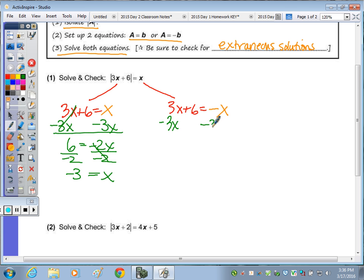Subtract 3x here, subtract 3x here. 6 is equal to negative 4x, divide by negative 4, and x equals—you can leave it negative 4/6, but if you reduce it, it's negative 3 halves.